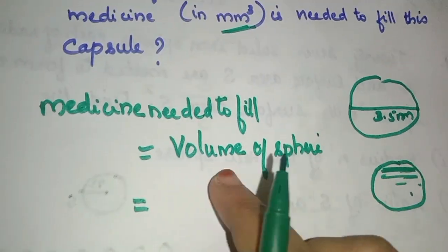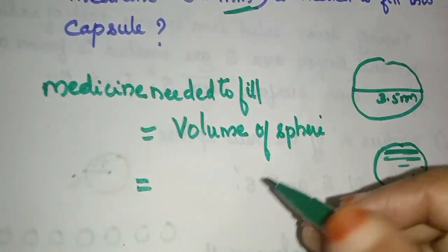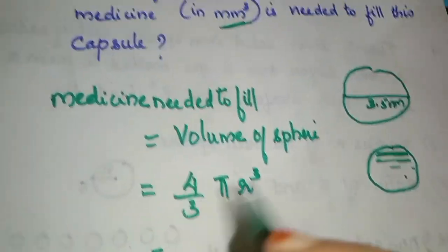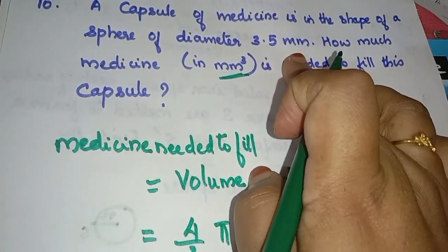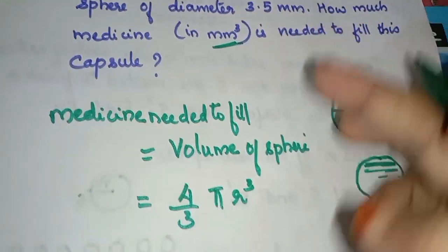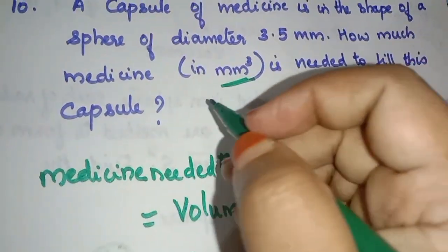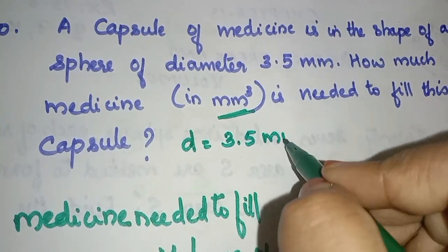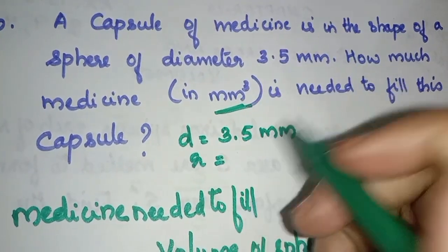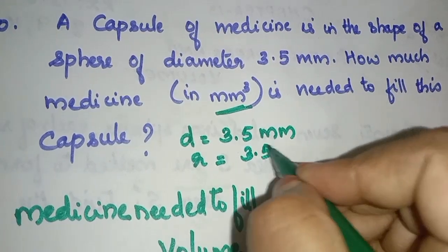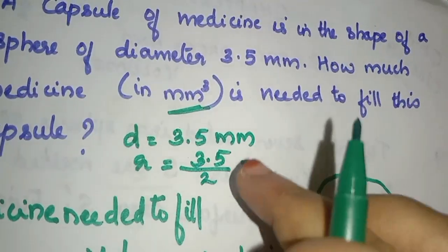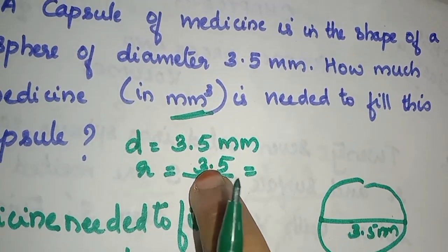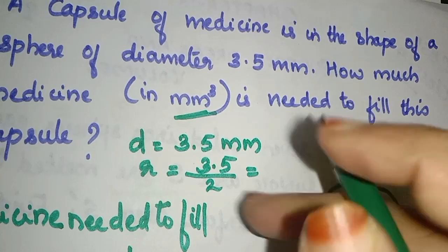The formula for volume of sphere is 4 by 3 pi r cube. We have the diameter as 3.5 mm. So the radius is 3.5 divided by 2. We remove the decimal point to get 35 by 20.